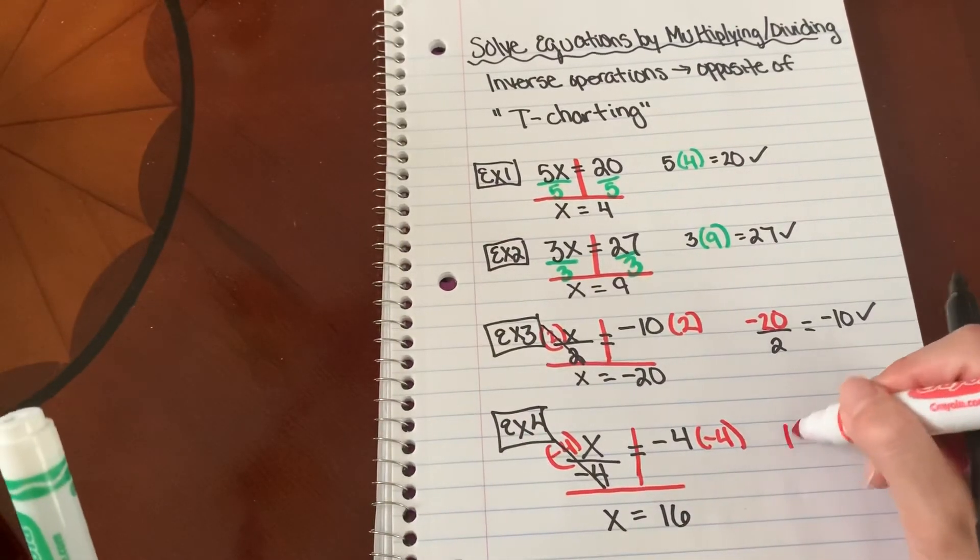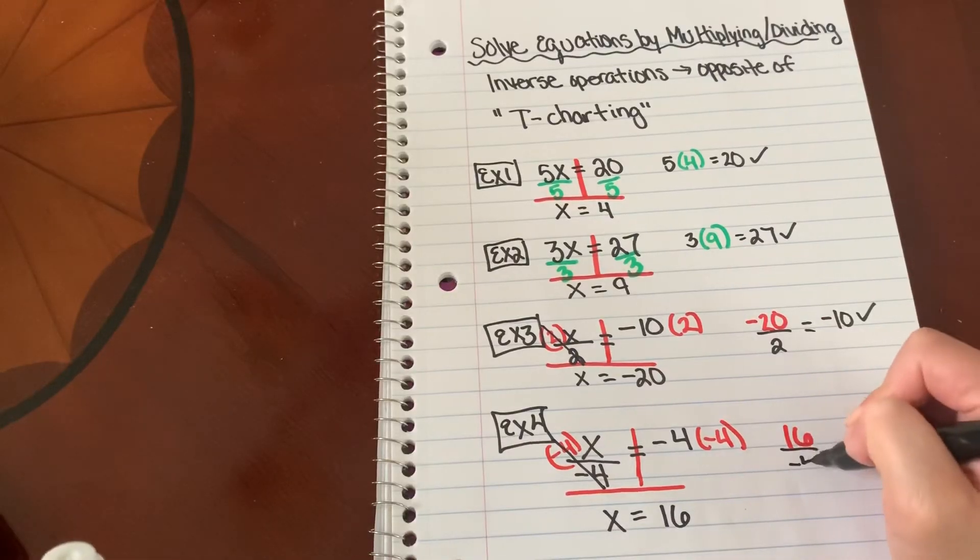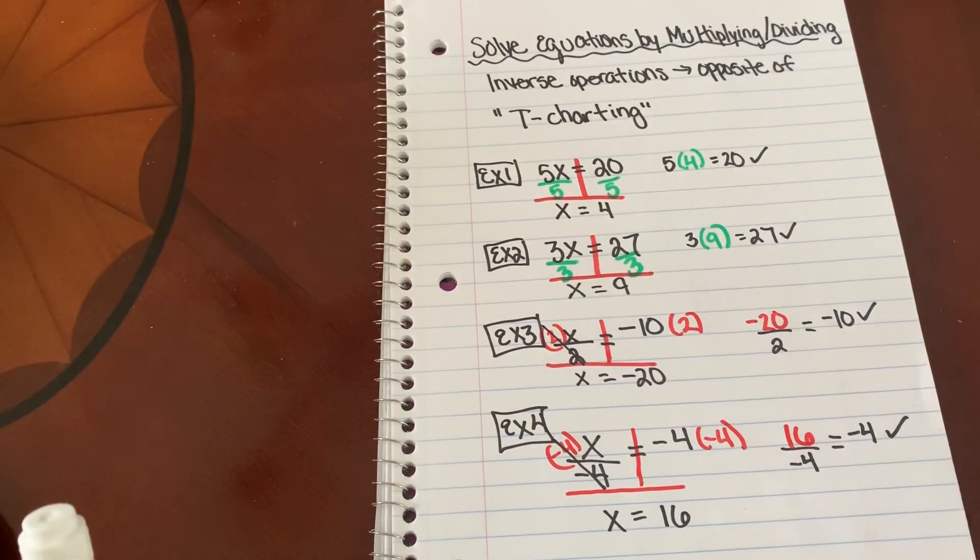So you can go ahead and double check that. Positive 16 divided by negative 4. Does that equal negative 4? Yes, it does.